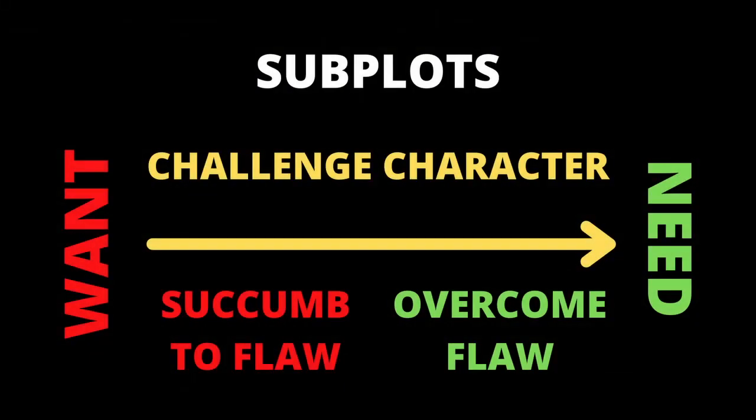With subplots, how they factor into this — subplots will usually push a character toward a need. Typically, I think the most common type of subplot is the romantic subplot. Usually two characters get together, and the romantic interest will challenge your main character to become a better person, to overcome that flaw in most cases. How a character reacts to a subplot will ultimately determine how things pan out at the end of the story — if they overcome that flaw, it will typically be because of how they interacted with their different subplots, whether that be a romantic subplot, mentor subplot, and so on.